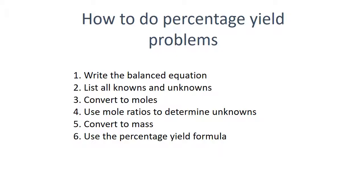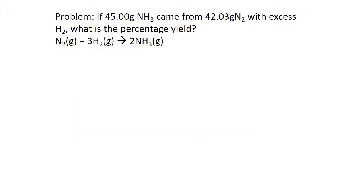In the next slide, we're going to look at an example of a percentage yield problem. The problem is: if 45 grams of ammonia comes from 42.03 grams of nitrogen with excess hydrogen — excess means you've got it in large amounts — what is the percentage yield of the reaction? I have given you the balanced equation. Pause the video now and see if you can work it out.